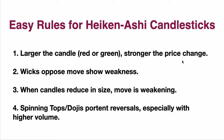Wicks opposing the move — that's a wick in the opposite direction — shows weakness. That's nothing necessarily new, but it's particularly important in Heiken Ashi candlesticks. When candles reduce in size, the move is weakening. We balance all this off against volume also. Spinning tops and dojis portend reversals, especially with higher volume — and I cannot emphasize that enough. Please, please look for higher volume.